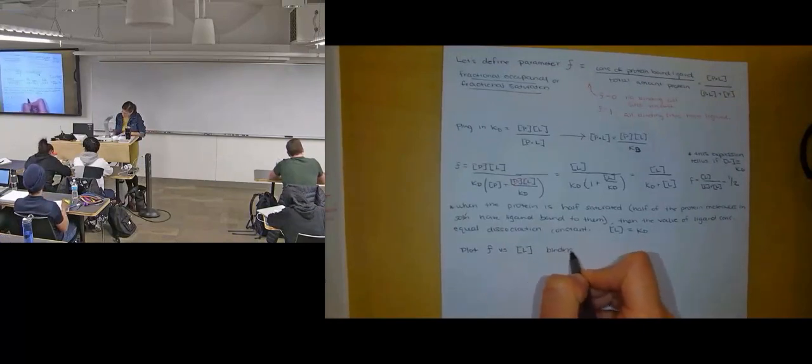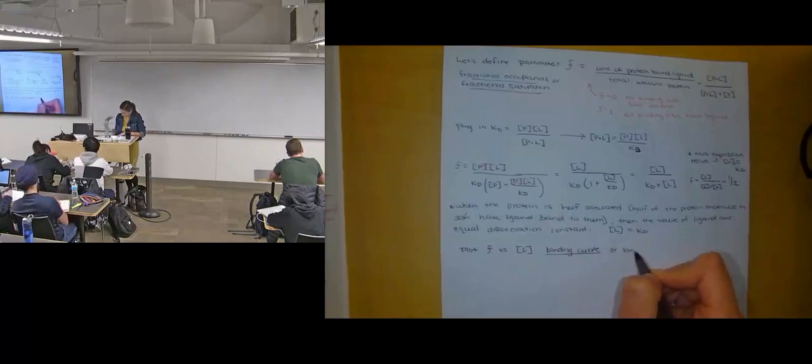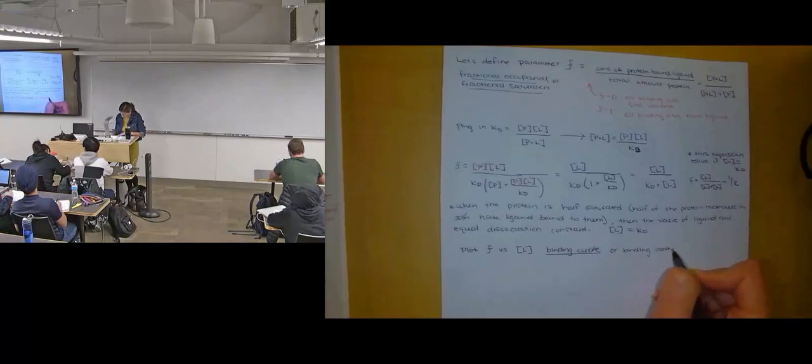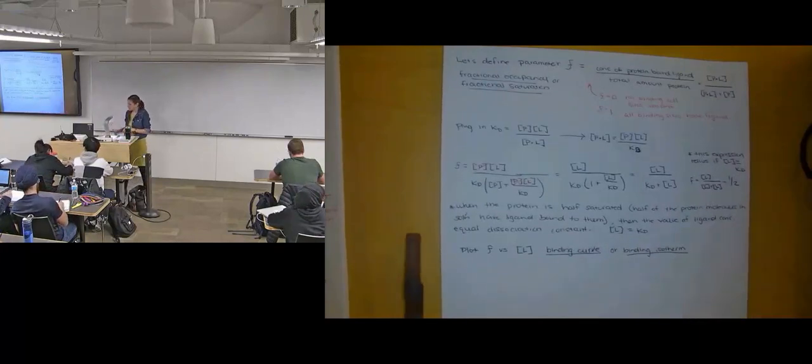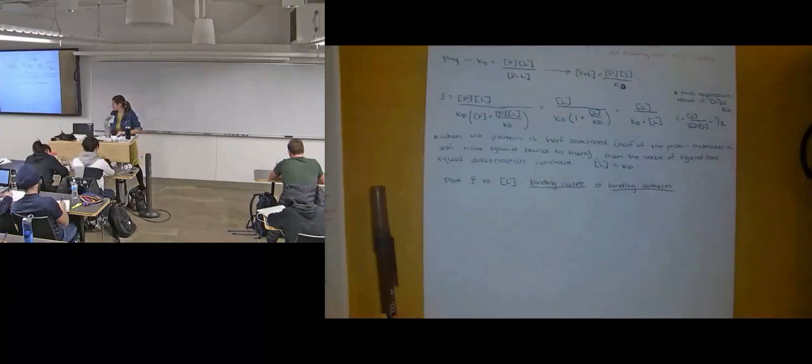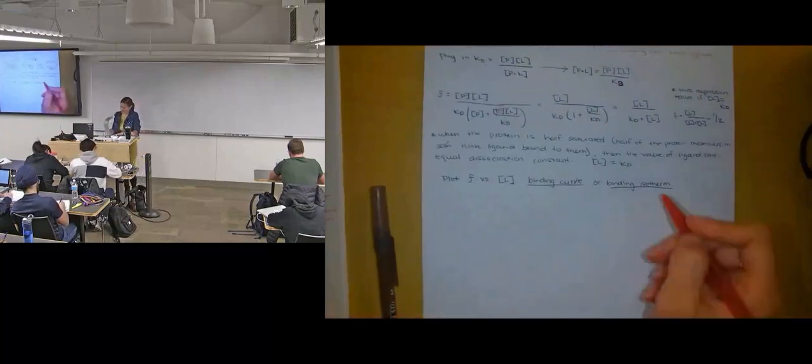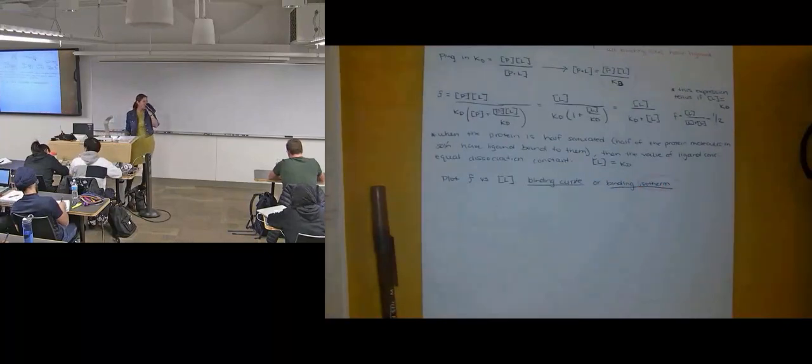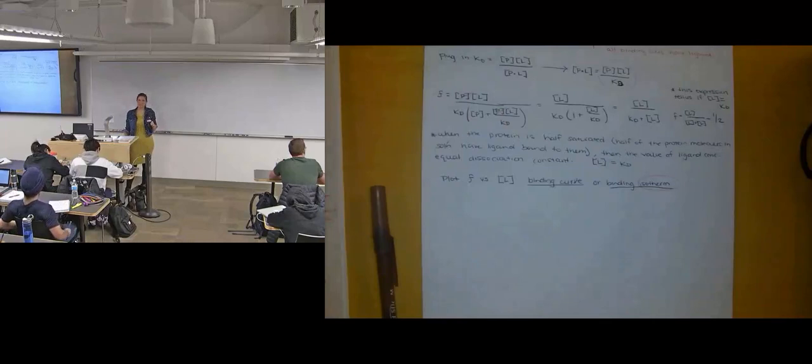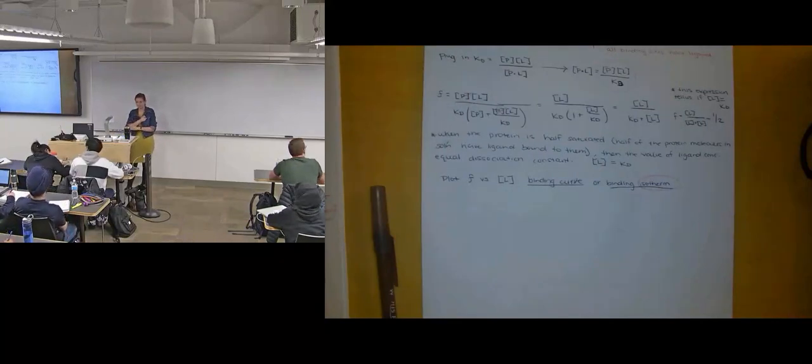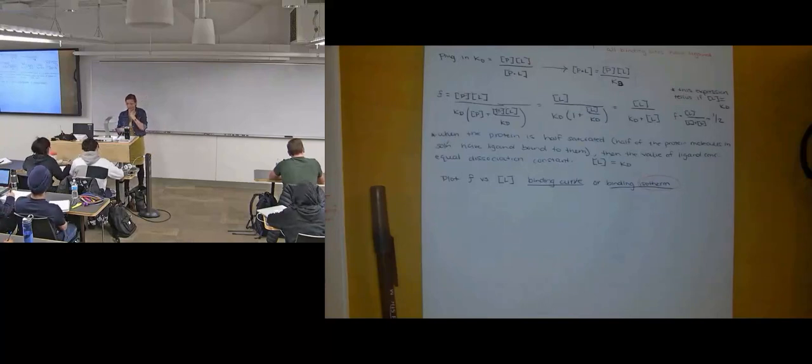Let's go ahead and plot our fractional occupancy versus our ligand concentration. This is called a binding curve or a binding isotherm. What do you think binding isotherm means? Just give the definition of isotherm and you're most of the way there.